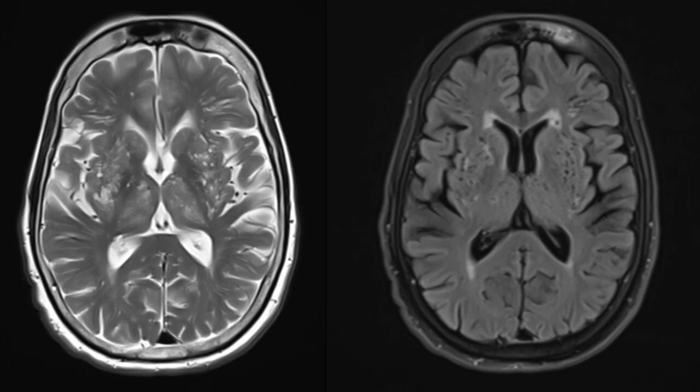Images of a 75-year-old patient show multiple perivascular spaces in bilateral basal ganglia and thalami, which are completely suppressing on FLAIR. These are called état criblé or status cribrosus, and the appearance is also described as Swiss cheese. Multiple linear perivascular spaces are also seen in bilateral white matter.